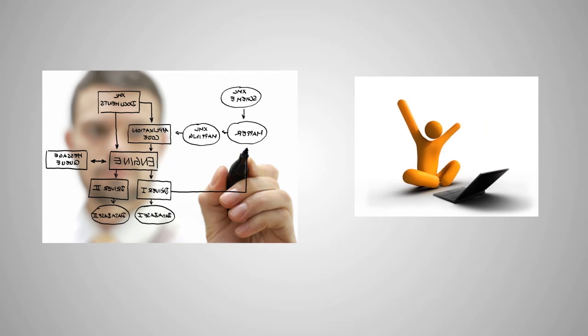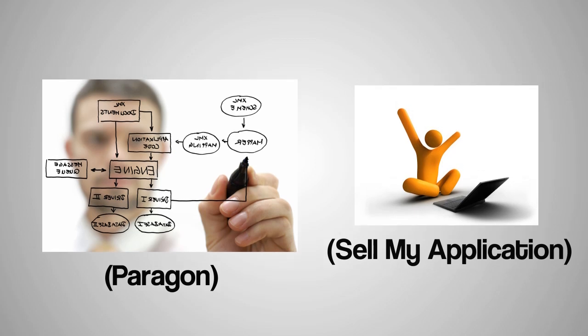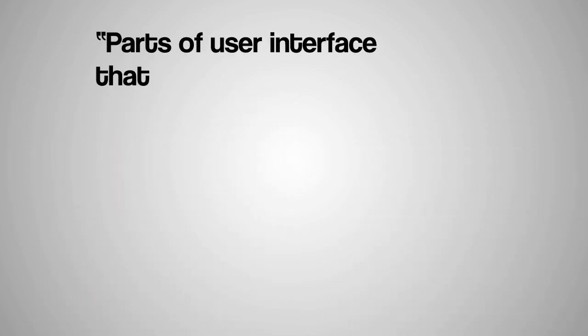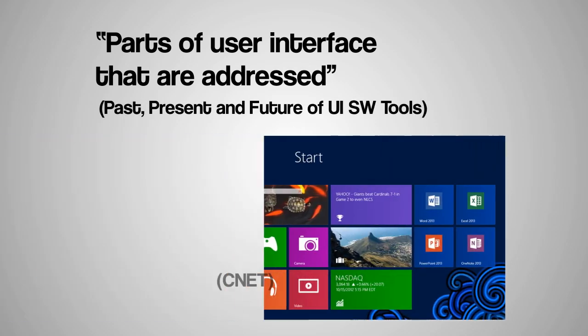So what makes HCI useful? Myers, Hudson, and Posh have identified five themes to determine which HCI tools are useful. The first theme is parts of user interface that are addressed, which means useful aspects of user interfaces are included in the tool.